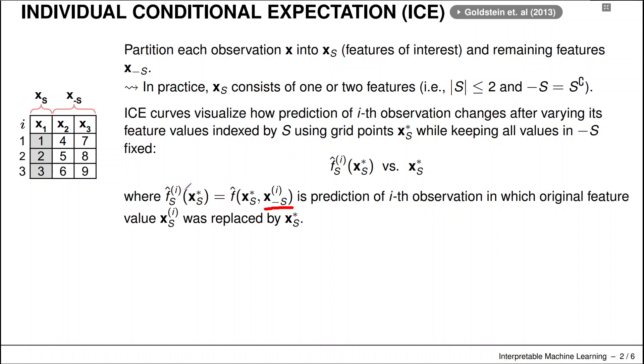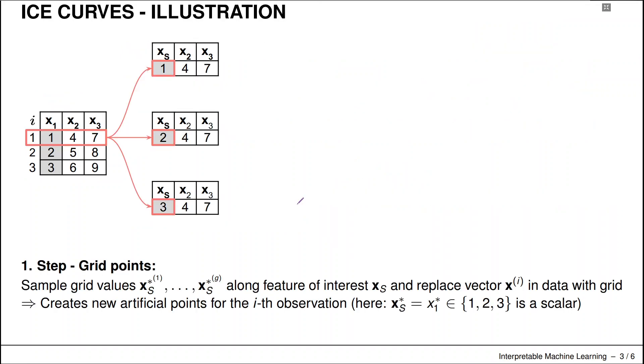Then we would have an ICE curve for each i-th observation which we denote here with this i in parenthesis. How is that computed? It's pretty simple.